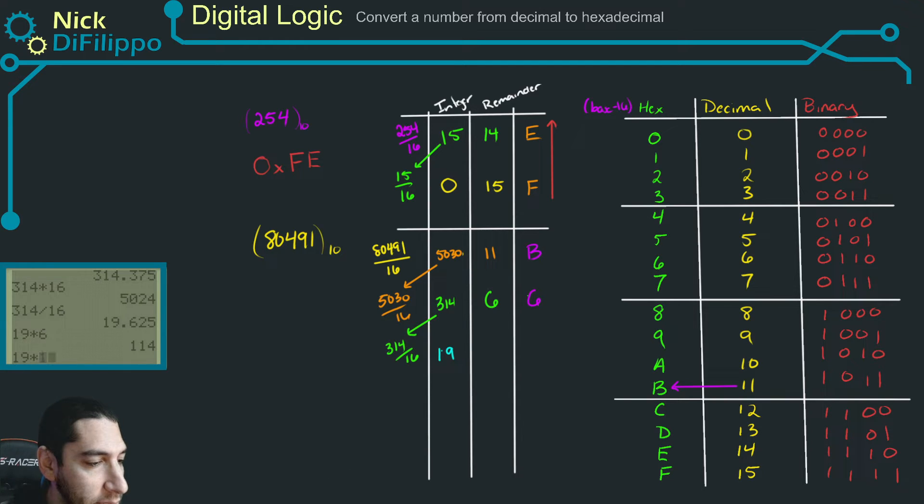My remainder is going to be 19 times 16. My remainder is going to be a 10, 314 minus 304. What is decimal 10? Decimal 10 is hexadecimal A. So this value right here will be an A.